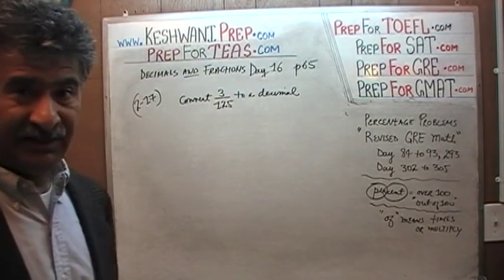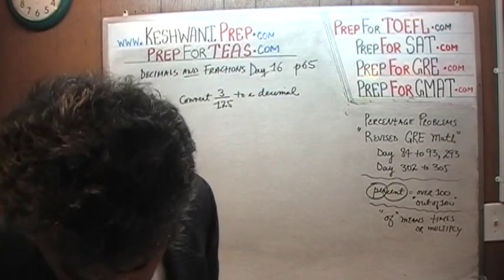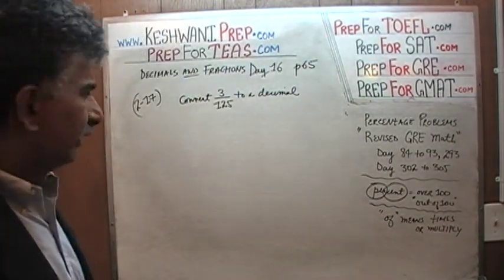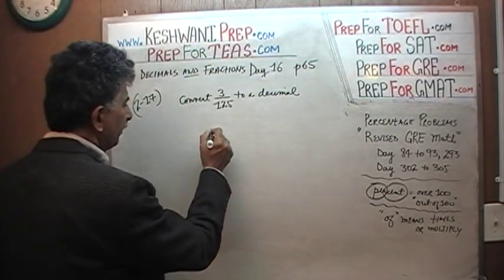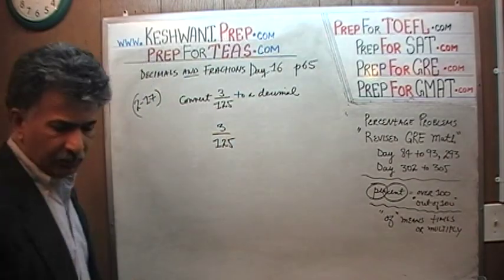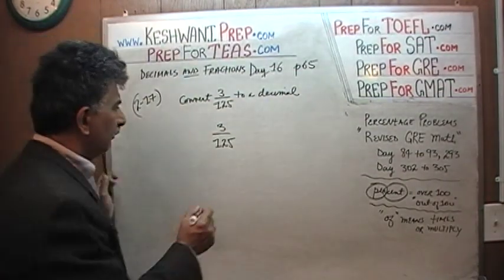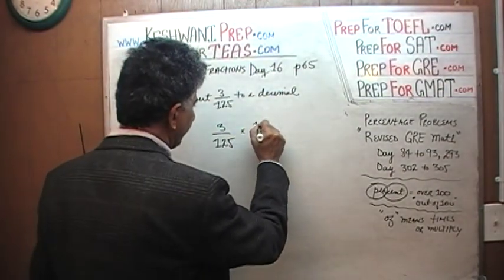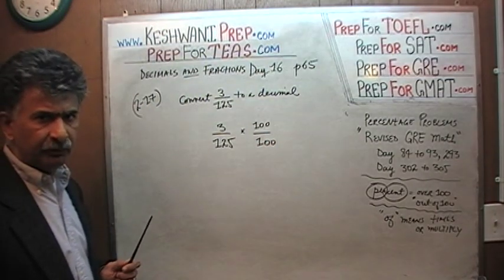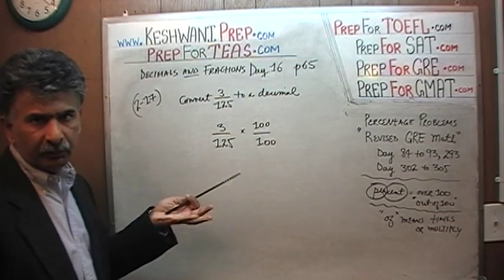These are not the sort of things we deal with in our daily lives, especially with a calculator. The book is doing it with long-hand division, but we don't want to deal with that. For 3 over 125, the idea is to convert it into simple decimals that we can multiply very easily. Let's multiply the top and bottom by 100. That's perfectly fine because multiplying by 100 over 100 is essentially multiplying by 1, so it doesn't change anything.